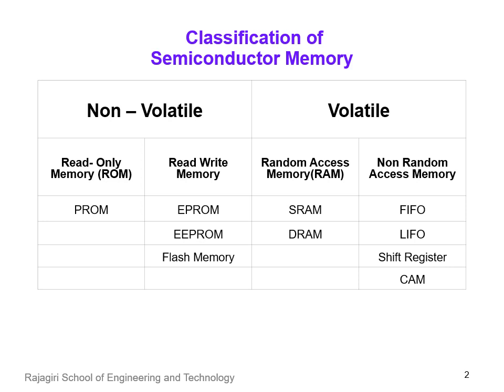Let us begin with a broad classification of semiconductor memories. They are broadly categorized as non-volatile and volatile memory. Non-volatile memory is capable of retaining the contents or bit values stored in it even after the power supply is cut off. Read-only memory is a category of non-volatile memory in which the values are written to it only once during the time of manufacture. Non-volatile memories like erasable programmable ROM, electrically erasable programmable ROM, and flash memory can be written several times. Random access memory is a type of volatile memory which cannot retain its stored contents when the power is turned off. However, RAM will be explained in yet another lecture.